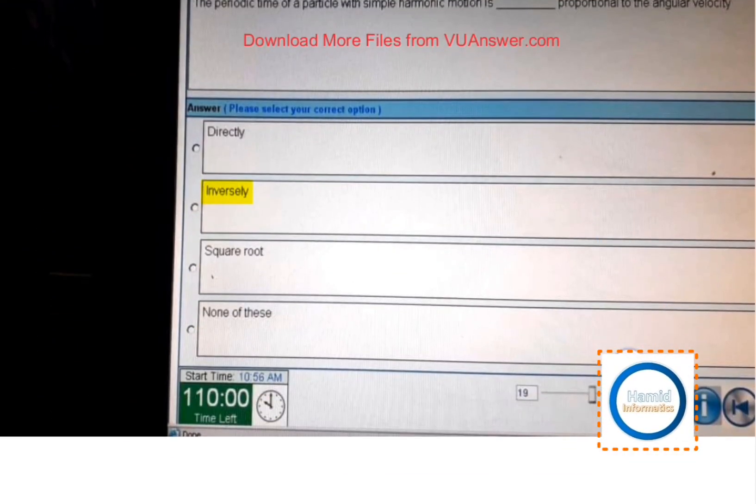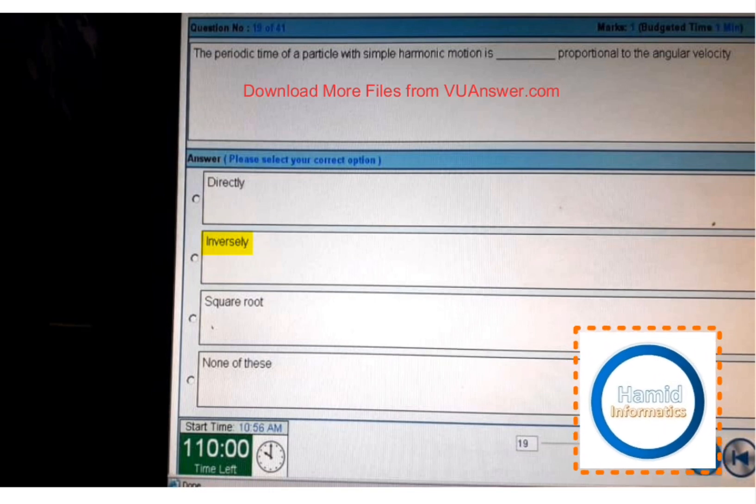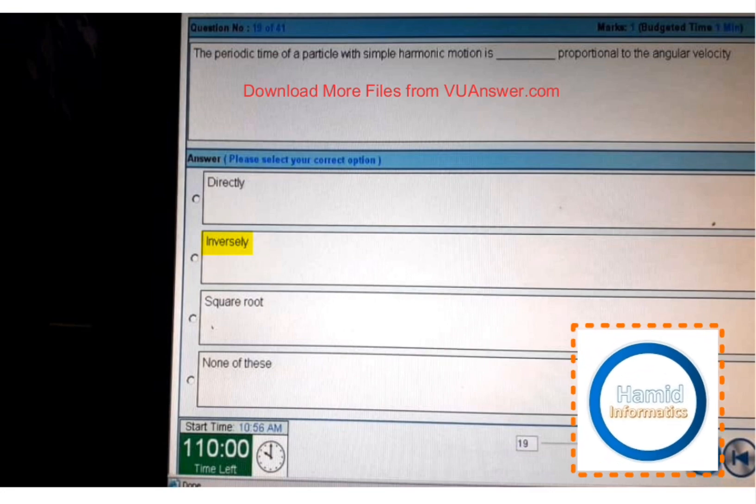Next is the periodic time of a particle with simple harmonic motion is inversely proportional to the angular velocity.